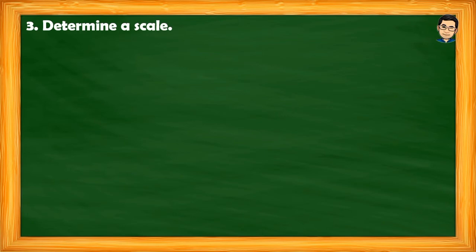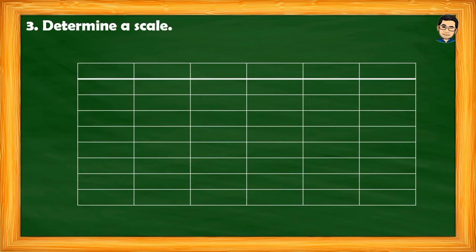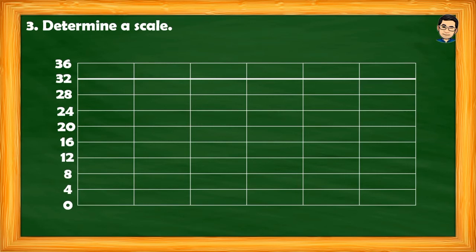Next, determine a scale. Based on our data, the scale used is 4. A scale of 1 is not practical since starting from 0 up to 30 would be too long. By 2 would also be too long. I decided to use 4; using 5 is also acceptable. In general, if the highest value is 100, a scale of 10 works; if it is 1000, a scale of 100 works. The scale should increase as the data values increase, so the vertical axis remains manageable.